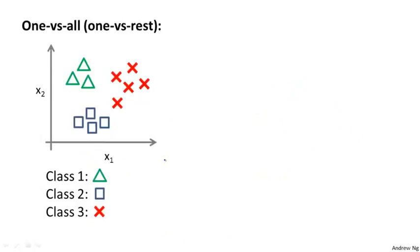Here's how one-versus-all classification works, and this is also sometimes called one-versus-rest. Let's say we have a training set like that shown on the left, where we have three classes of y equals 1, we denote that with a triangle, if y equals 2, the square, and if y equals 3, then the cross.